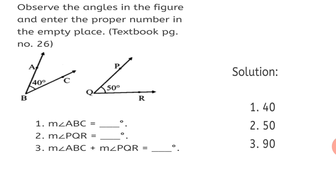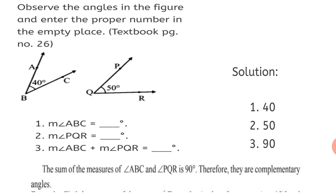The measure of Angle ABC plus the measure of Angle PQR is equal to 40 plus 50, which equals 90 degrees. So the sum of the measures of Angle ABC and Angle PQR is 90 degrees. Therefore, they are complementary angles. Two angles whose sum is 90 degrees are called complementary angles.